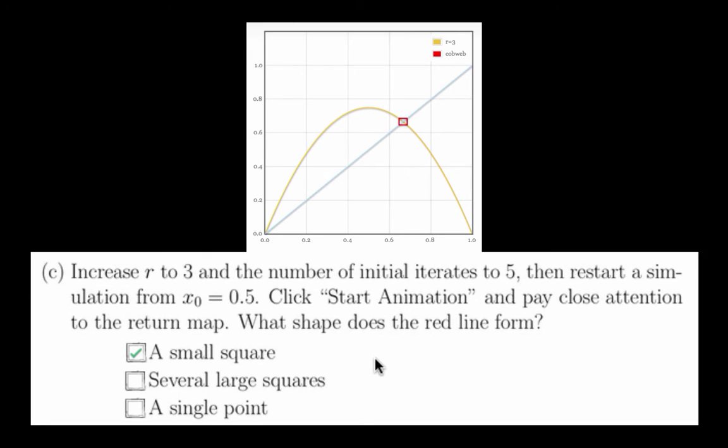As an aside, a small square on the Cobweb plot is associated with a 2-cycle in the logistic map dynamics.